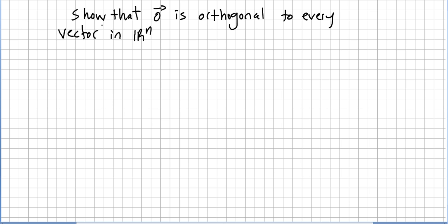The very first one: show that the vector zero is orthogonal to every vector in the vector space. I think I did this in a previous video, but nevertheless I'm going to do it again — in a quick way.